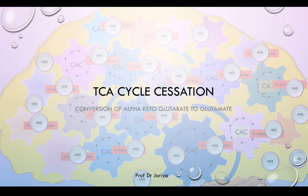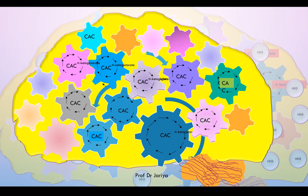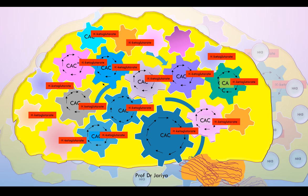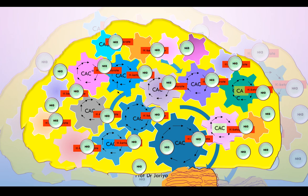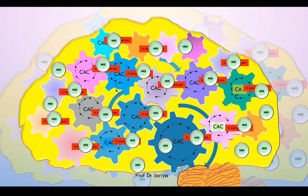First, how does ammonia affect the TCA cycle in the brain? The TCA cycle is required for energy production, and the brain is dependent upon glucose for its energy needs. Glucose through glycolysis is converted into pyruvate, pyruvate is converted to acetyl-CoA, and acetyl-CoA enters the citric acid cycle. Alpha-ketoglutarate is an intermediate of the TCA cycle. Excess ammonia in the brain combines with alpha-ketoglutarate, converting it into glutamate, which is further converted into glutamine.